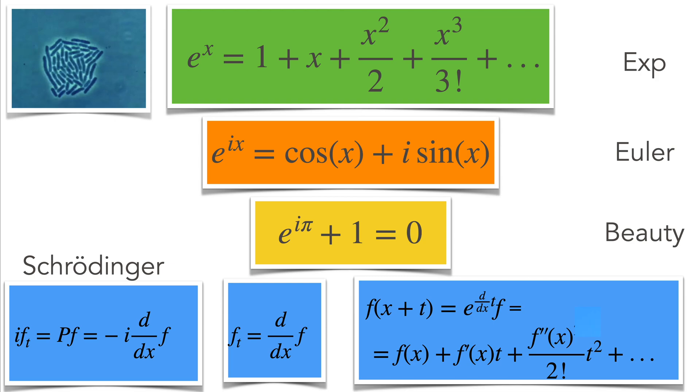Taylor can be seen as a Schrödinger equation for the momentum operator minus i d over dx, which gives the transport equation. E to the d over dx—that's nothing else evaluated—f is the Taylor series.